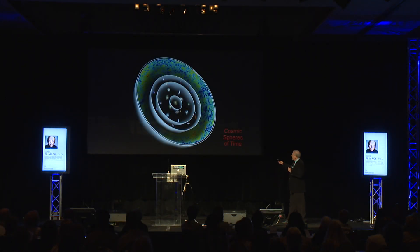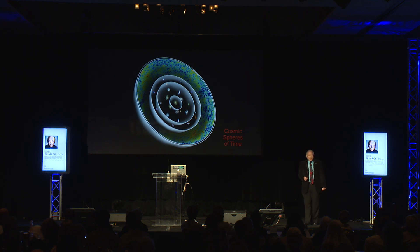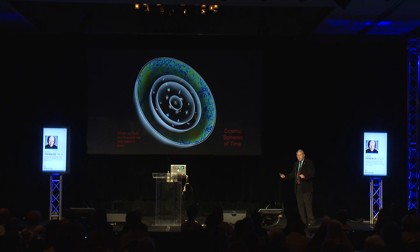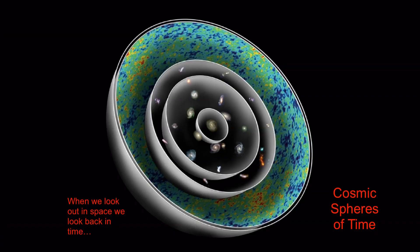What we just saw, cut in half now, is cosmic spheres of time. Because as we look out in space, we're looking back in time. The light from the galaxies far away left billions of years ago, so we see these galaxies as they were when the light left them billions of years ago. But we're putting these images, which are from the Hubble Space Telescope, where these objects now are, according to our best calculations.